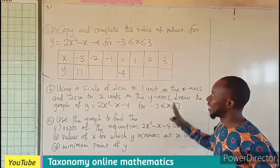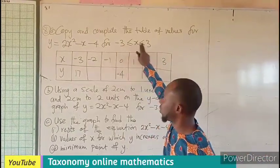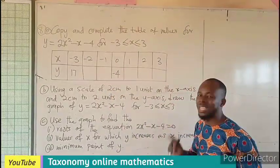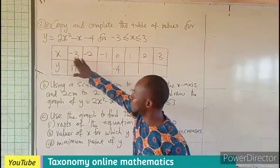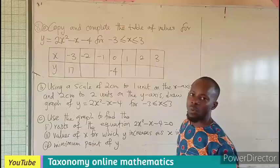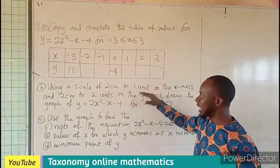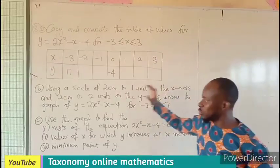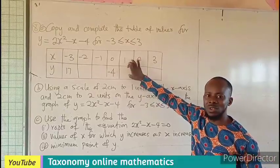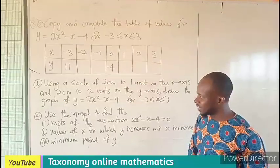We are to copy this table and complete the values for x from negative 3 to 3 using the equation y = 2x² - x - 4. We need to substitute x values to find the missing y values. Then we'll use a scale of 2cm to 1 unit on the x-axis and 2cm to 2 units on the y-axis to plot these points. From there we'll use the graph to solve the following questions. Let's get started.